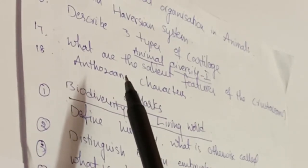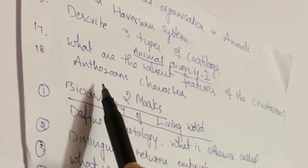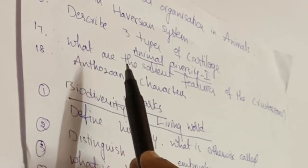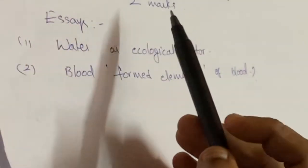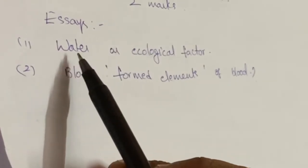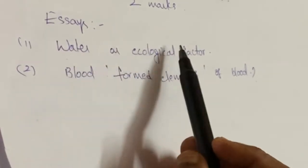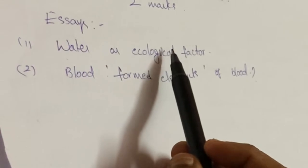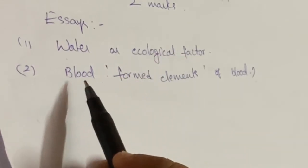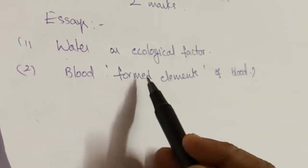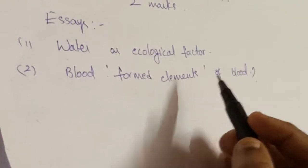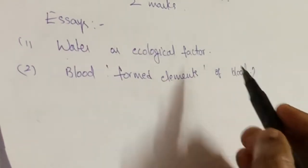The essay questions which are important from the last chapter, the 8th chapter, is water as an ecological factor. You have to study this one carefully. From the second chapter, blood—the formed elements of blood—is very important.